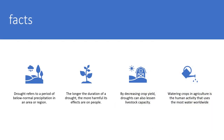Facts: droughts refer to periods of below-normal precipitation in an area or region. The longer the duration of a drought, the more harmful its effects on people — less plants will grow and human life will become almost unstable.